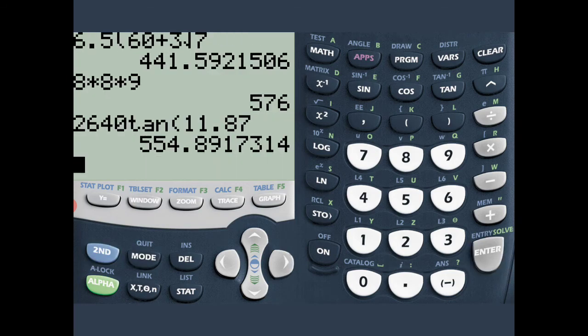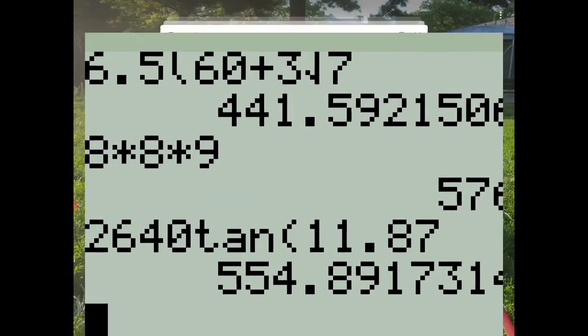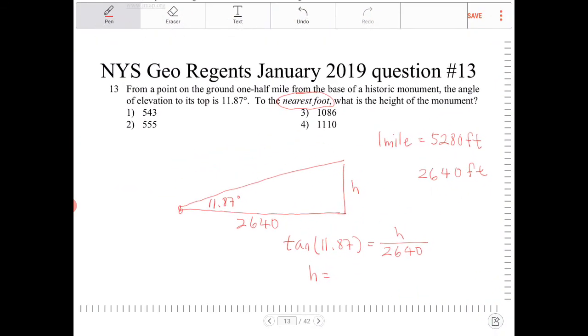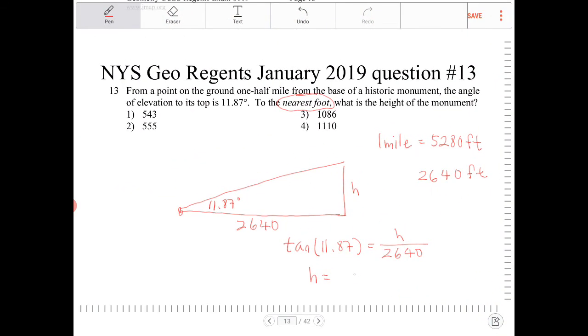And if I press enter, I'll end up with 554.8. So the nearest foot would be 555. Which is option two.